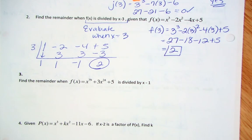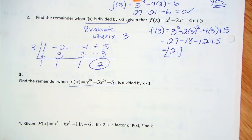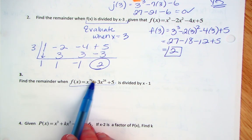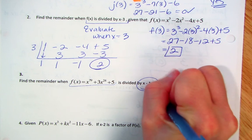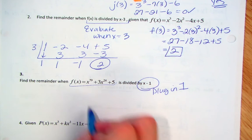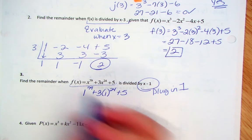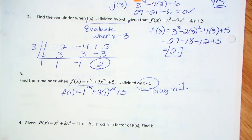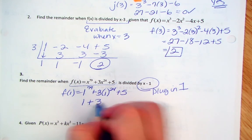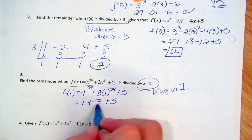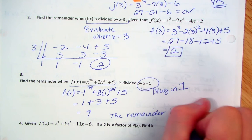Number 3: find the remainder when dividing by x minus 1. Synthetic division doesn't make sense here because you'd have to go from the 79th power down to the 24th, adding in all the placeholders. So it just makes sense to evaluate by plugging in 1: 1 to the 79th power plus 3 times 1 to the 24th plus 5. That's 1 plus 3 plus 5 equals 9. So the remainder is 9.